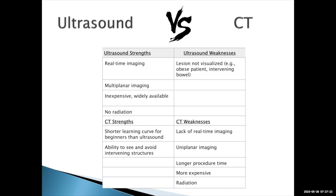Ultrasound uses multi-planar imaging — you can turn the probe anywhere you want and use any plane. CT is more uni-planar imaging, so you don't have that option. Ultrasound is widely available, inexpensive, and there is no radiation. With CT, you don't have real-time imaging — you hit the pedal and acquire image by image. There is less choice in how you can approach a target, procedural times are generally longer, CT is much more expensive, and there is radiation exposure.